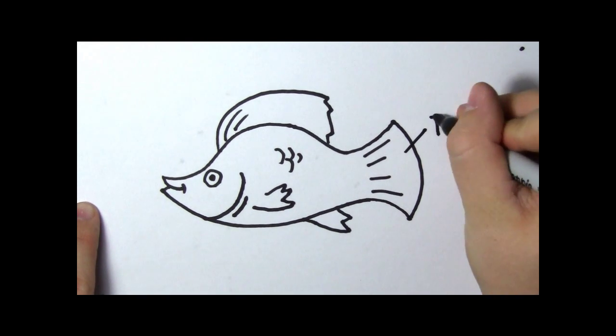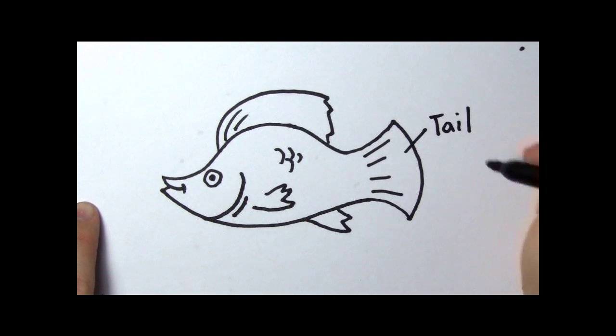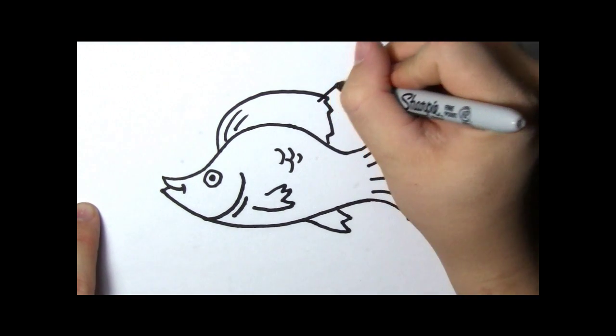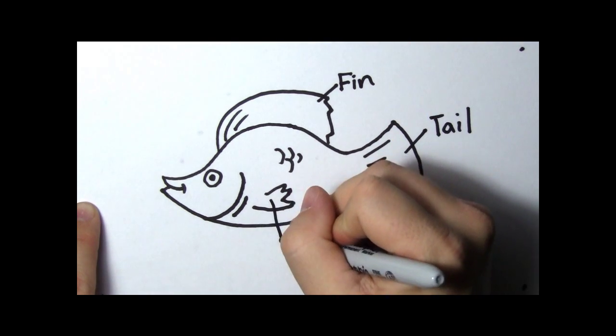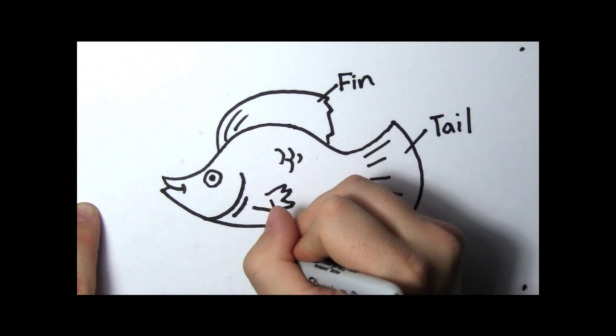This is a molly's tail. The molly has lots of fins. This is the top fin. And this is the side and bottom fins.